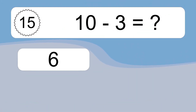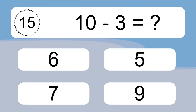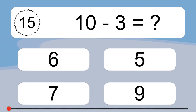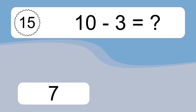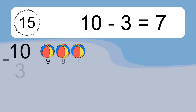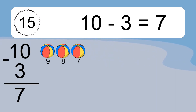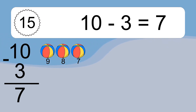10 minus 3 equals what? 10 minus 3 equals 7. Let's count it: 9, 8, 7.